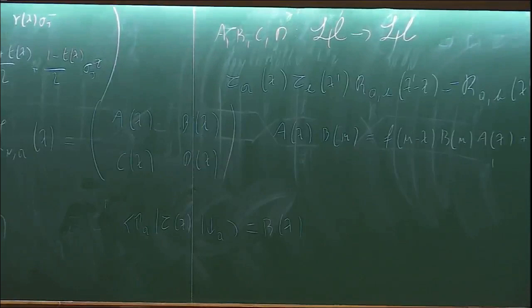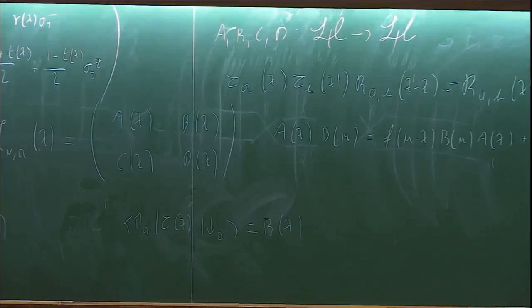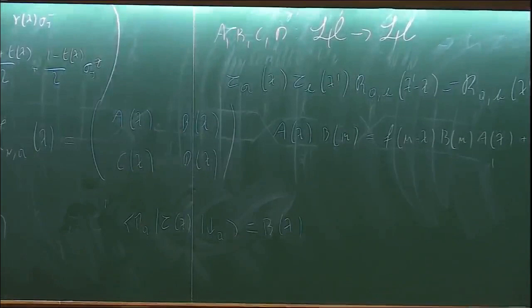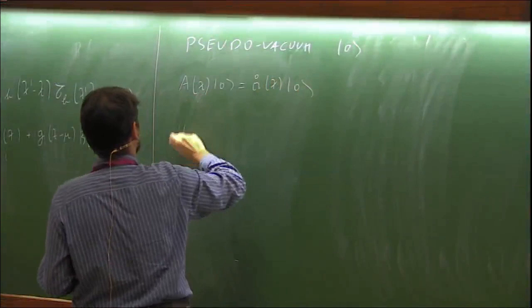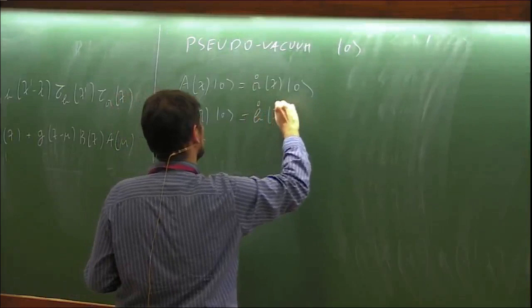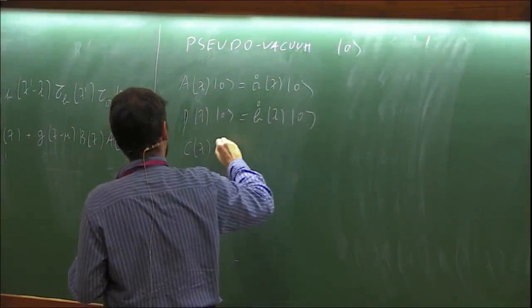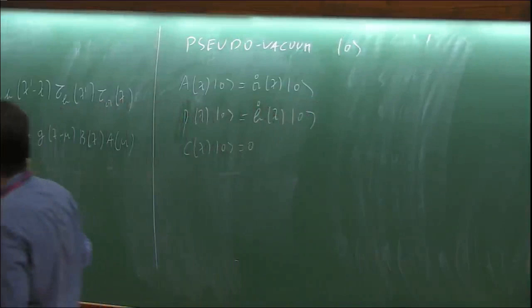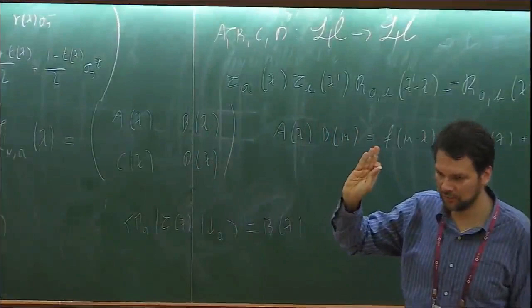The way I proceed to construct eigenstates is to look for an easy state called the pseudo-vacuum, which is defined as an eigenstate of the transfer matrix with some eigenvalues and which is annihilated by all C operators. This has a natural interpretation: if C corresponds to a scattering event in which a spin flips down, then B flips a spin up. So you look for a state that morally has all spins up.